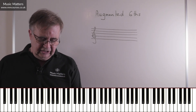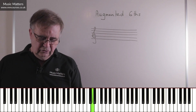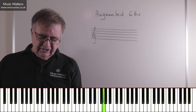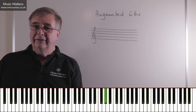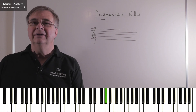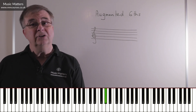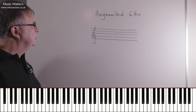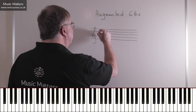So if I'm in C major, here's C — one, two, three, four, five, six. So A is the sixth degree of the scale. A-flat is therefore the lowered sixth. It's not G-sharp, it's A-flat. So the first note you're going to put here is A-flat.